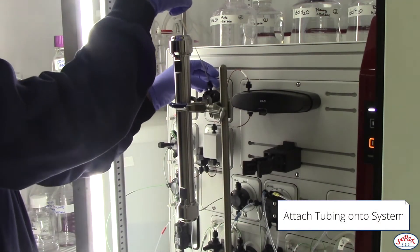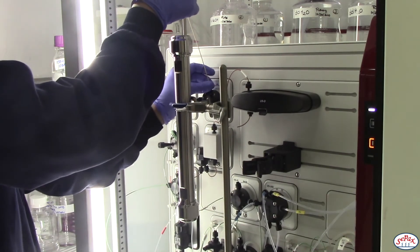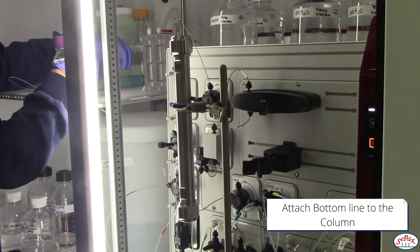Attach the tubing to the inlet and outlet port on the system, and attach the bottom line to the column.